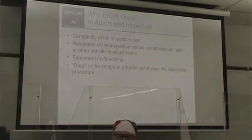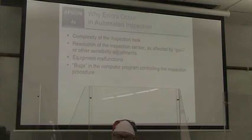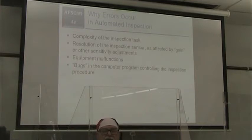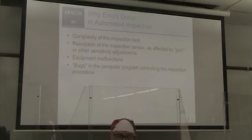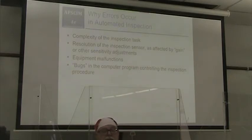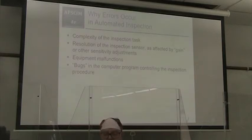Why do errors occur in automated inspection? First is the complexity of the inspection task. Second is the resolution of the inspection sensor affected by gain or other sensitivity adjustments — maybe we've been getting too many misses so we adjust sensitivity. Third could be equipment malfunction, or bugs in the computer program that controls the actual inspection procedure.